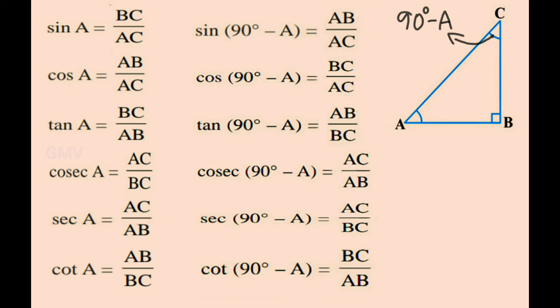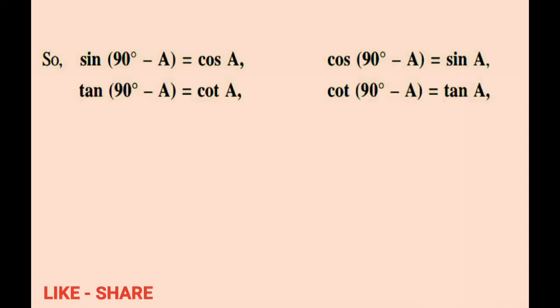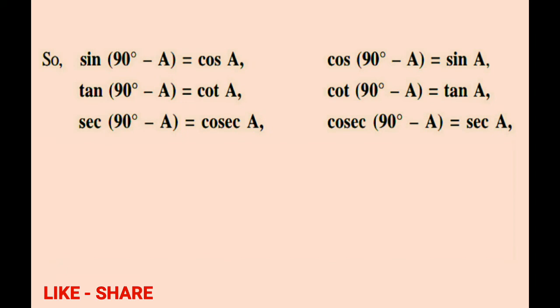Now let us recall all these relations once again. Sin(90° − A) is equal to cos A. Cos(90° − A) is equal to sin A. Tan(90° − A) is equal to cot A. Cot(90° − A) is equal to tan A. Sec(90° − A) is equal to cosec A.